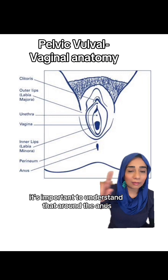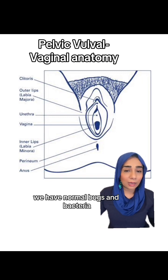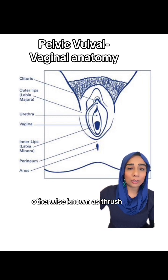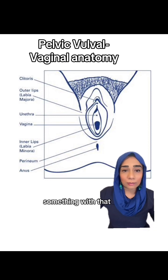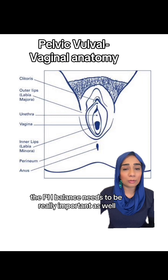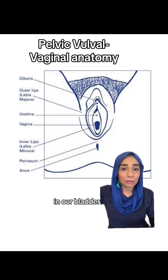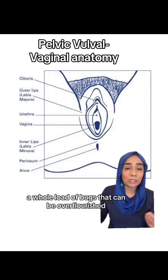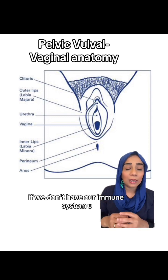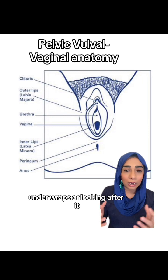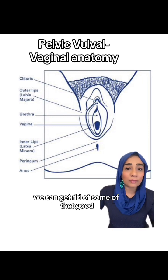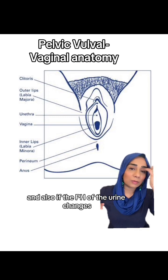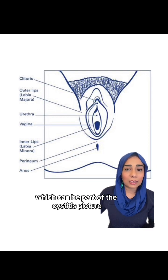It's important to understand that around the anus and in our back passages, we have normal bugs and bacteria, the most common being E. coli. In our vulval vaginal area, we have candida albicans — otherwise known as thrush — or bacterial vaginosis, which is also normal, something that we harbour as women. The pH is really important as well. Up into our urethra and bladder, we can have loads of other bugs like proteases, Klebsiella, and coliforms — a whole load of bugs that can overflouish if we don't have our immune system keeping them under control, or if we overwash and get rid of good healthy bacteria. Also, if the pH of the urine changes, it gives you that acid, burny feeling, which can be part of the cystitis picture.